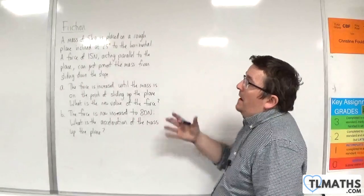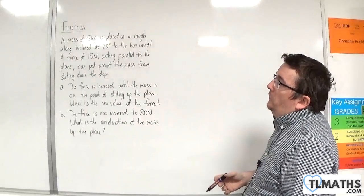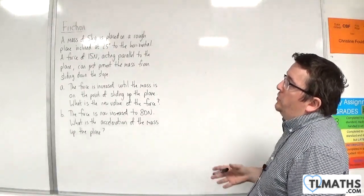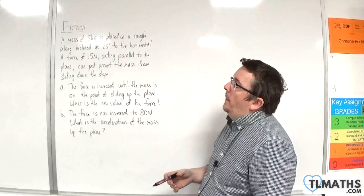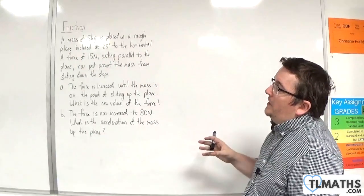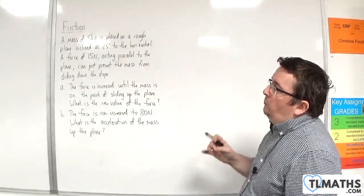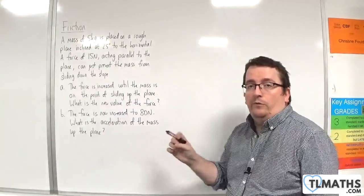In this video, we have a mass of 5 kilos placed on a rough plane inclined at 25 degrees to the horizontal. A force of 15 newtons acting parallel to the plane can just prevent the mass from sliding down the slope.